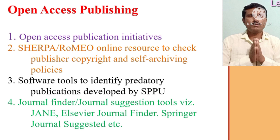The second is Sherpa Romeo, an online resource to check publisher copyright and self-archiving policies. Third is software tools to identify predatory publications, one such developed by SPPU. And the fourth one is journal finder — journal suggestion tools like Jane, Elsevier journal finder, and Springer journal suggester, etc.